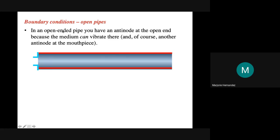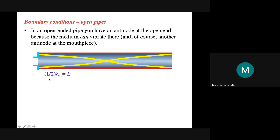The last boundary condition is open pipes. For open pipes, both ends are open, so you have an antinode on each side — two antinodes — and a node at the center. The length here is half of the wavelength: half a bump on one side, half a bump on the other, totaling half a wavelength. Plugging that into the wave speed equation, the fundamental frequency is V over 2L.